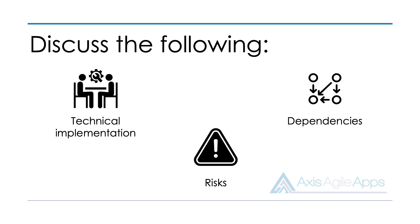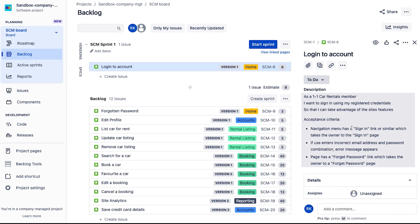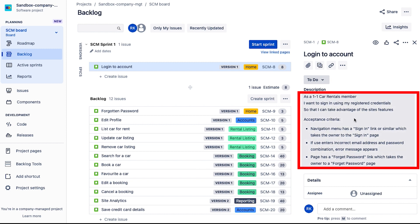Thirdly, discuss any risks — things to look out for. It may be that the team is working with a new technology and might get it wrong, or that somebody is away that sprint who would typically support the team, creating a level of risk. If you think about those risks in advance, you're more likely to achieve a successful plan. You can capture this information on the product backlog item in the description, in the comments section, or even as attachments in JIRA.